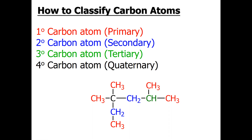Generally we can classify carbon into four degrees: one-degree carbon, two-degree, three-degree, or four-degree carbon atom. They are also known as primary carbon, secondary carbon, tertiary carbon, and quaternary carbon. The methyl groups shown here are all primary carbon because all methyl groups are bonded with only one carbon.